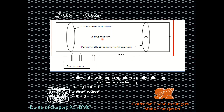A laser unit consists of a lasing medium to which energy is supplied. The atoms go into higher energy states and start reflecting to and fro between two mirrors inside a chamber. One mirror has a small aperture; when you press the laser pedal, the aperture opens and a sharp beam escapes, traveling from the source to the site of application.